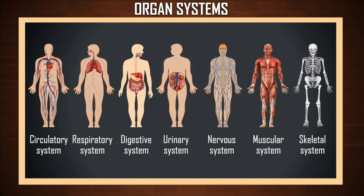These will be the organ systems we are going to look at: circulatory system, respiratory system — and as you know, circulatory and respiratory are linked in a way, as we will see — then digestive system, urinary system, nervous system, muscular system, and skeletal system.